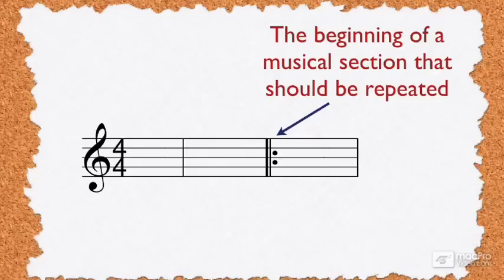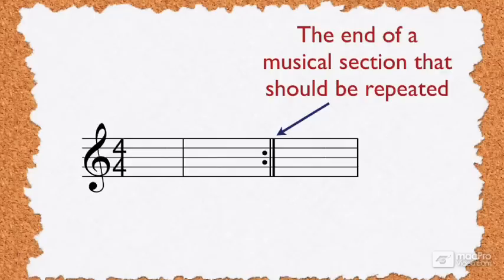And the opposite, a thin bar line followed by a thick bar line with two dots tells you that you're at the end of a section that should be repeated. We'll come back to this concept of measures shortly and learn about time signatures. But first, we need to discuss note values.